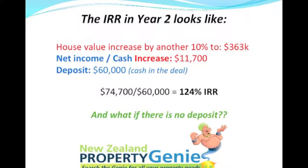We're using the same $60,000 deposit from when we purchased the property. The property increased from $300,000 to $330,000 in year one, and by another 10% to $363,000 in year two. The total capital increase of $63,000 over two years, plus the $11,700 cash return, comes to $74,700. Dividing by the $60,000 deposit gives 124% internal rate of return over two years.